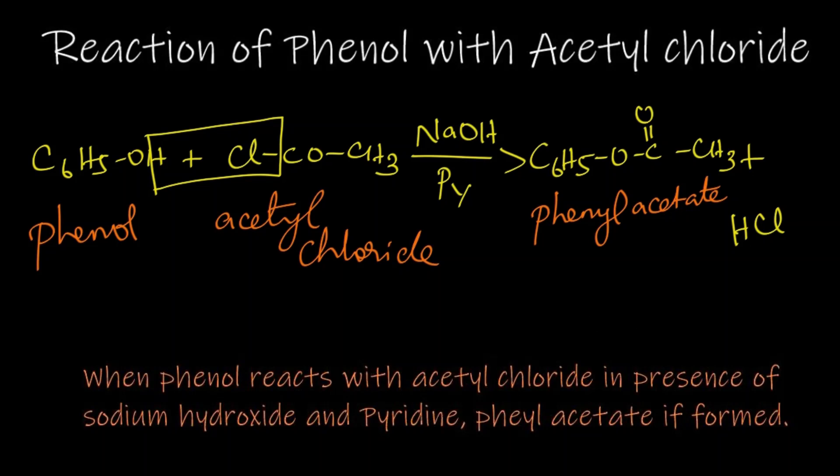So phenyl acetate is prepared from phenol and acetyl chloride. When phenol reacts with acetyl chloride in presence of sodium hydroxide and pyridine, phenyl acetate is formed.